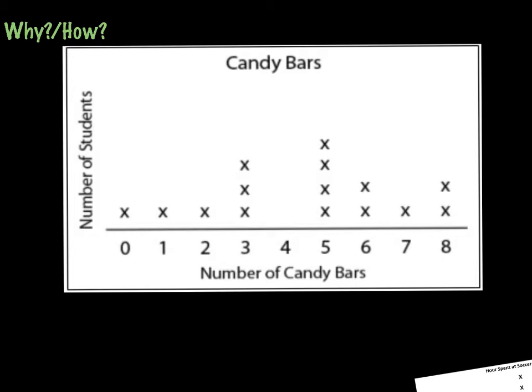If I look at this line plot, I should be able to answer questions like, how many students had 5 candy bars? And you should be able to tell me that there were 1, 2, 3, 4 students that had 5 candy bars.